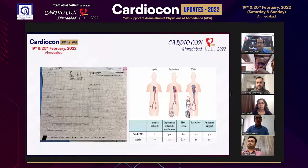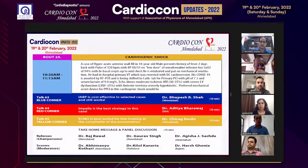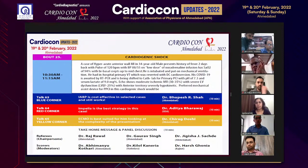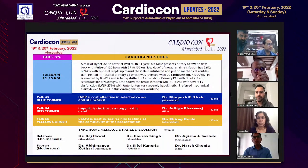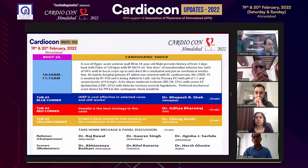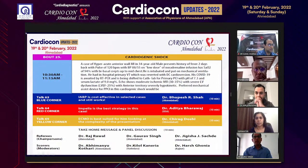Our third speaker is Dr. Chirag Doshi, CVTS senior surgeon at UN Mehta Institute of Cardiology in Ahmedabad and HOD at CVTS. We are dealing with a case of hyperacute MI — a young male with fever for two days, tachycardia, hypotension on inotrope support, saturation of 94%, and an episode of VT which was successfully DC-cardioverted. What would be the preferred mechanical assist device for primary PCI in this patient?